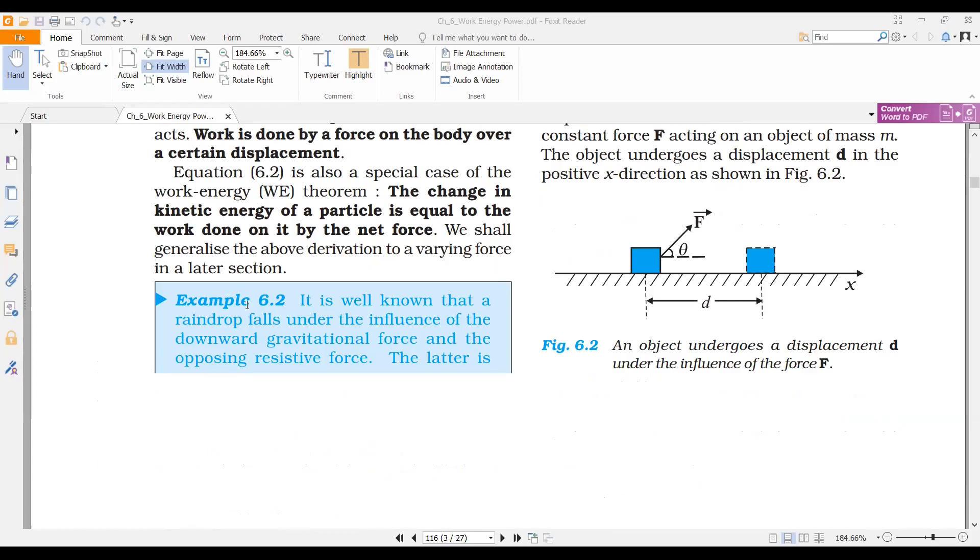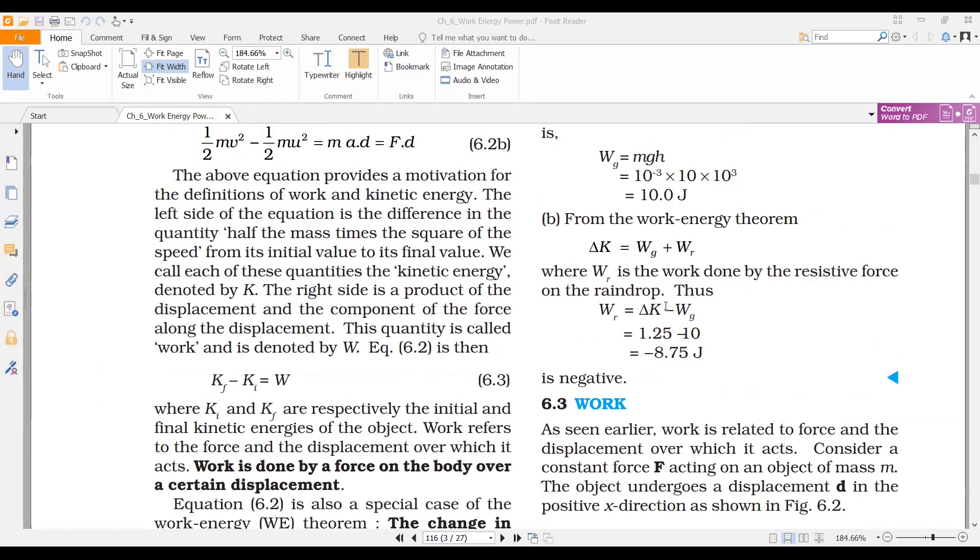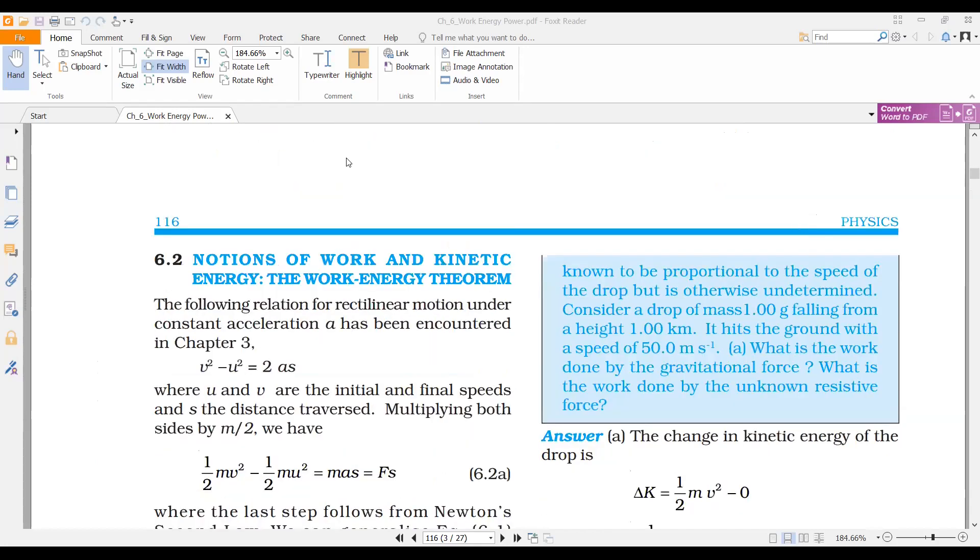Look at this example 6.2. It is well known that a raindrop falls under the influence of downward gravitational force and the opposing resistive force. The latter is known to be proportional to the speed of the drop but is otherwise undetermined.